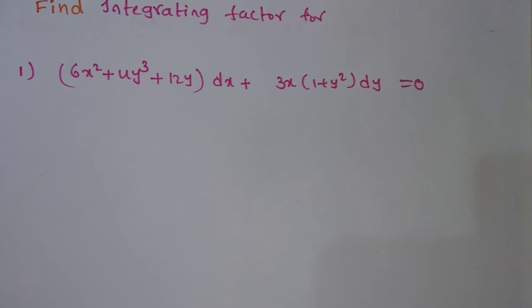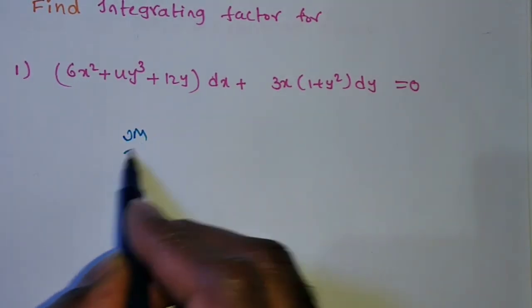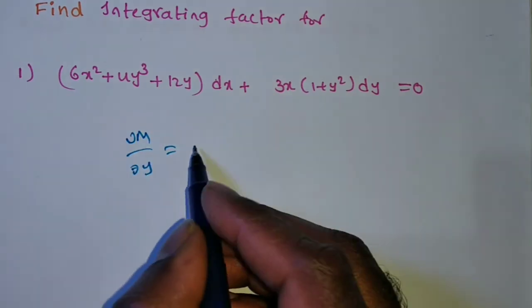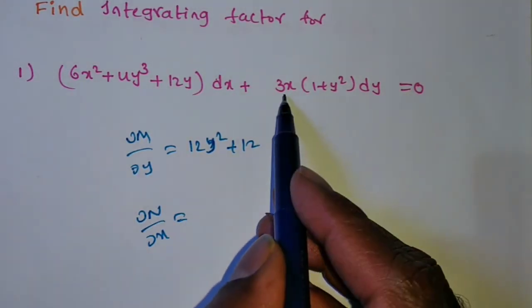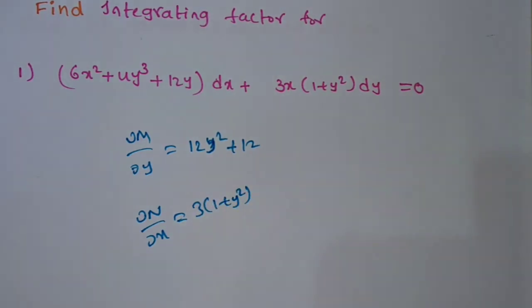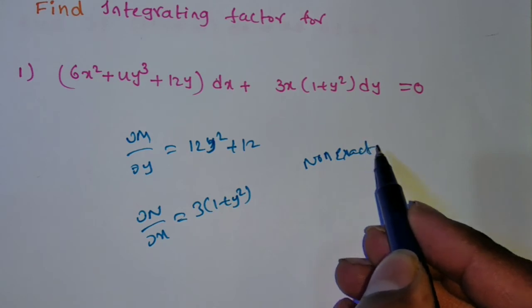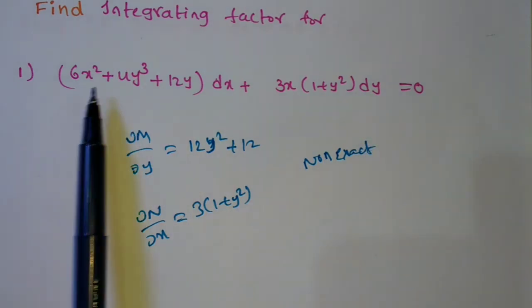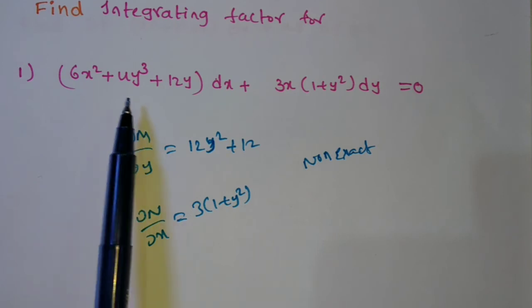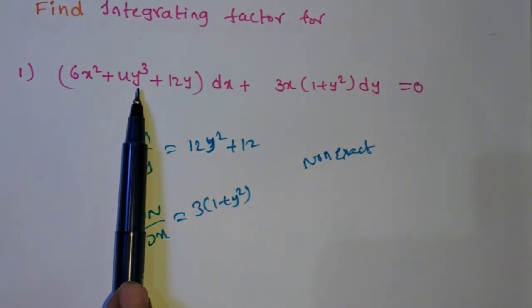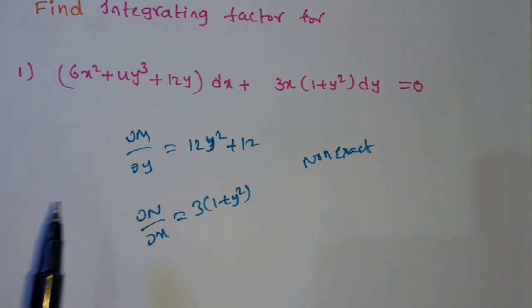Find the integrating factor for this equation in the form M dx + N dy. Check ∂M/∂y: it is 0. Check ∂N/∂x: 3(1+y²)·1 = 3(1+y²). Both are not equal, so non-exact. Inspection not possible; degree 2 vs degree 3 so non-homogeneous; Rule 3 also not possible since y²x² terms don't match.